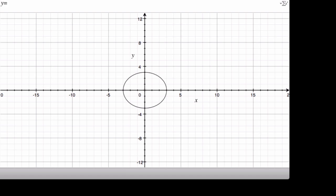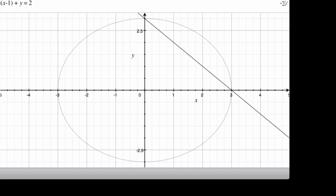We're going to add another equation. Now, let's add in our line. So, we have x minus 1, plus y equals 2. And there you can see it. The line is crossing the circle twice. So, here we can expect to find two solutions.